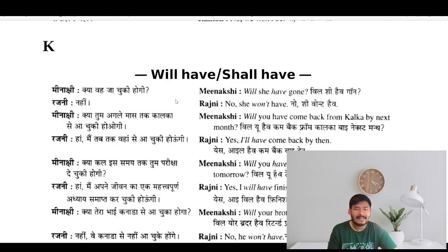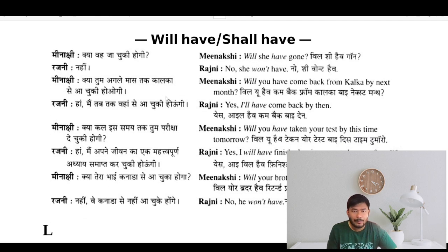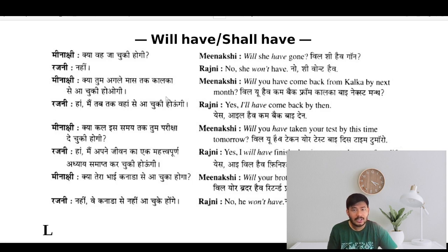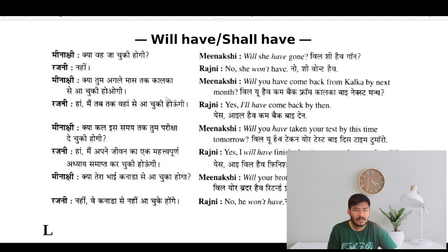Will have and shall have. There is a conversation between Meenakshi and Rajni. Meenakshi is asking: Kya waha jaa chuki hogi — will she have gone? Kya tum agle maas tak Calcutta se aa chuki hogi — will you have come back from Calcutta by next month?